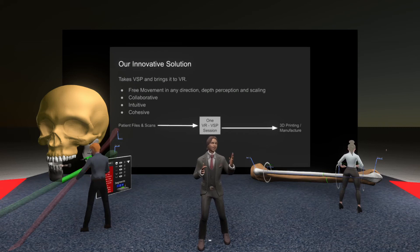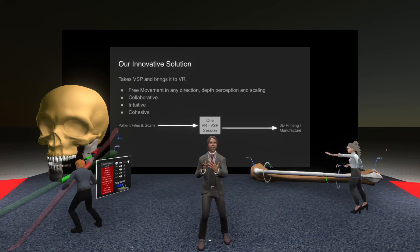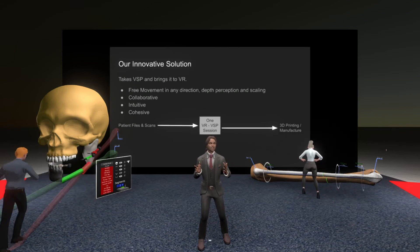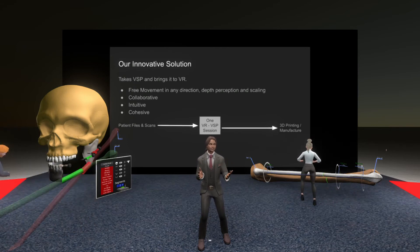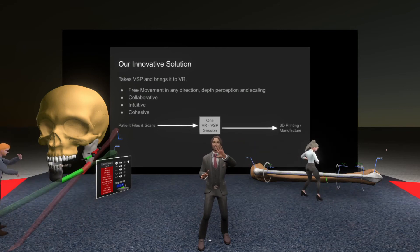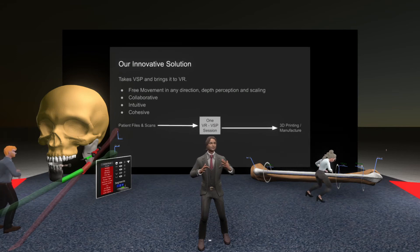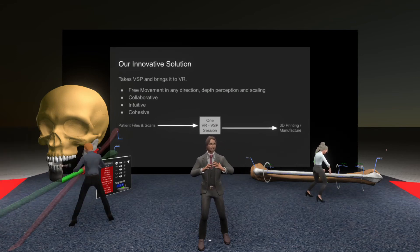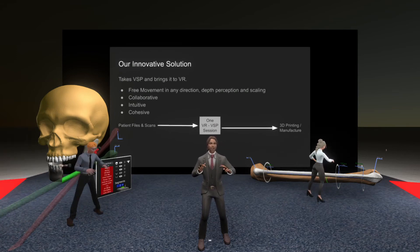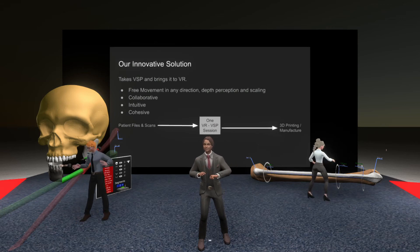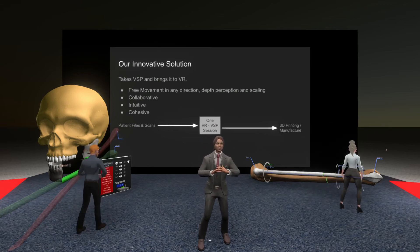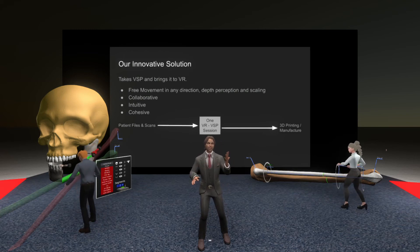As each person has their own view, they can see everything they need from all the angles they want. Interacting with the plan is also intuitive — if you can move your hands, you can interact with this tooling using natural motions that mirror what you do in the real world. Finally, it's cohesive, as we've combined many VSP steps into the exact same space and tool. Our goal is for the entire process to be completed in just one short session with just our tooling.